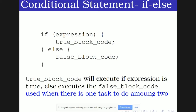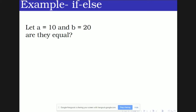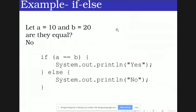If-else is mainly used for taking one task among two. Let's check: a holds 10 and b holds 20. Are they equal? 10 equals 20? No. In the program, the equality operator gives false, so it goes to the else block and executes the statements there, giving us the answer 'no'.